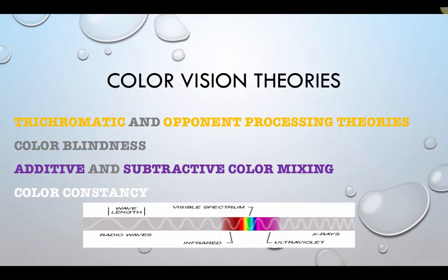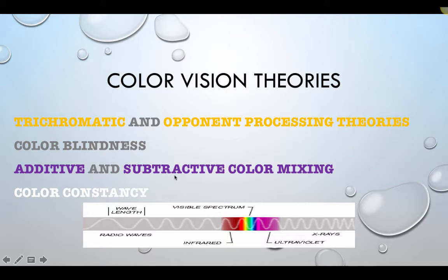Hi everybody. Today we're going to talk about color vision theories in the visual processing system. By the end of this video you want to make sure you understand the difference between trichromatic theory and opponent processing theory — these are often confused term pairs in AP psychology. We're going to talk about color blindness, and additive and subtractive color mixing, and color constancy.